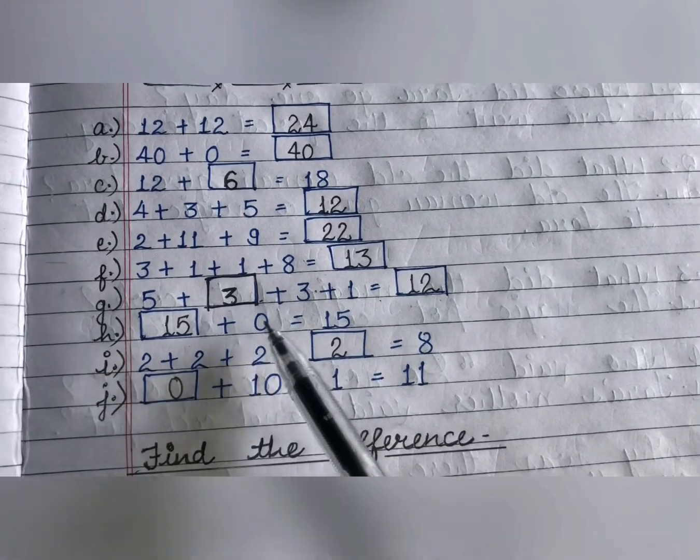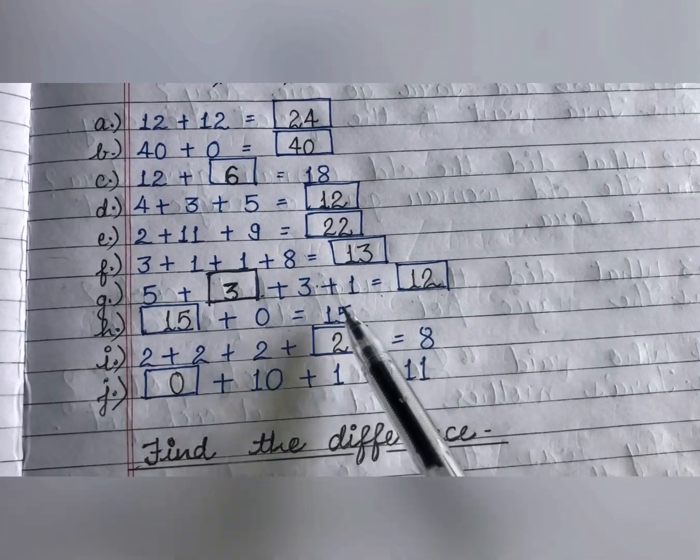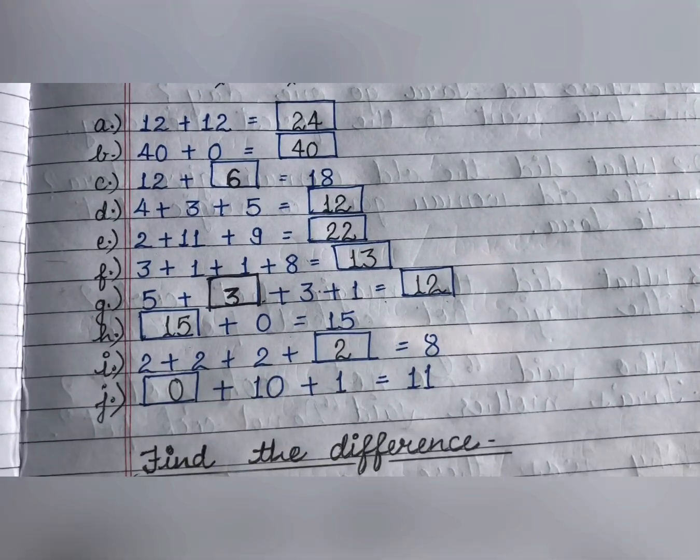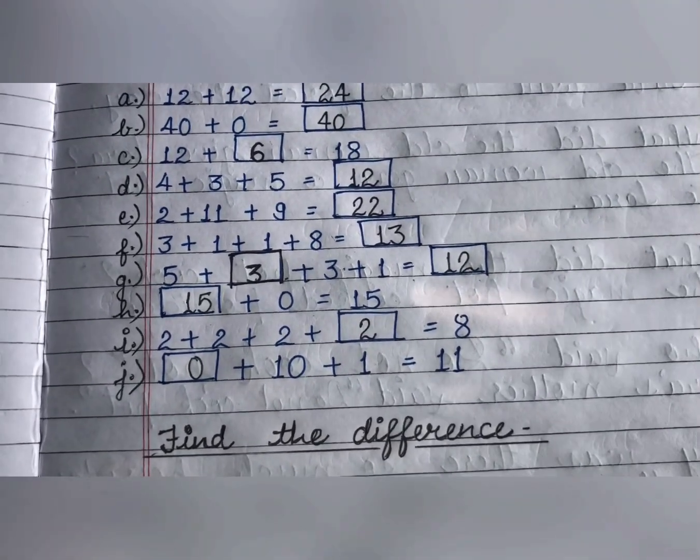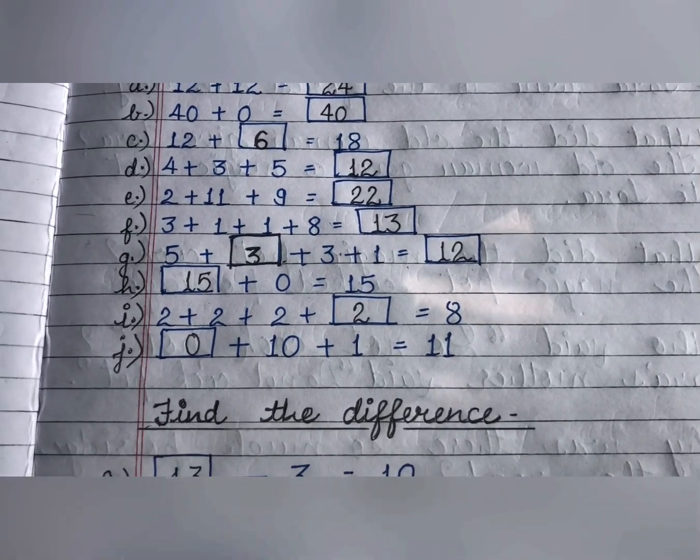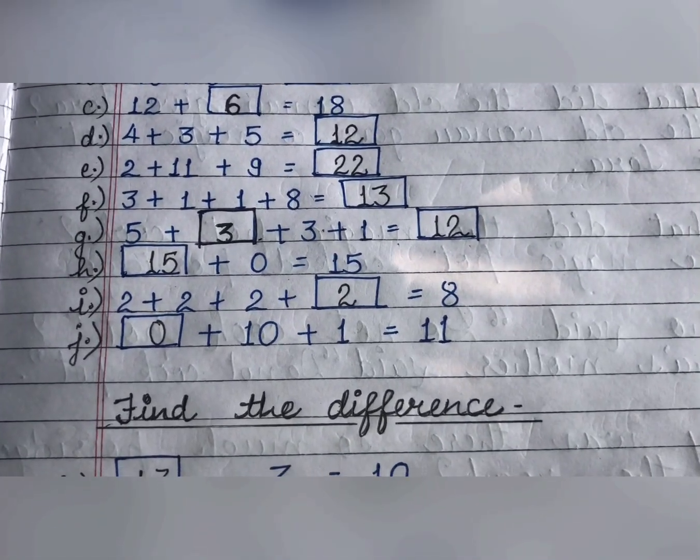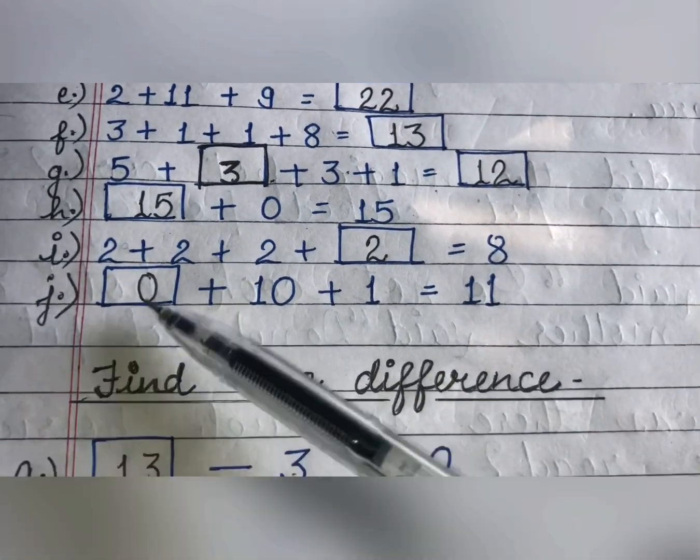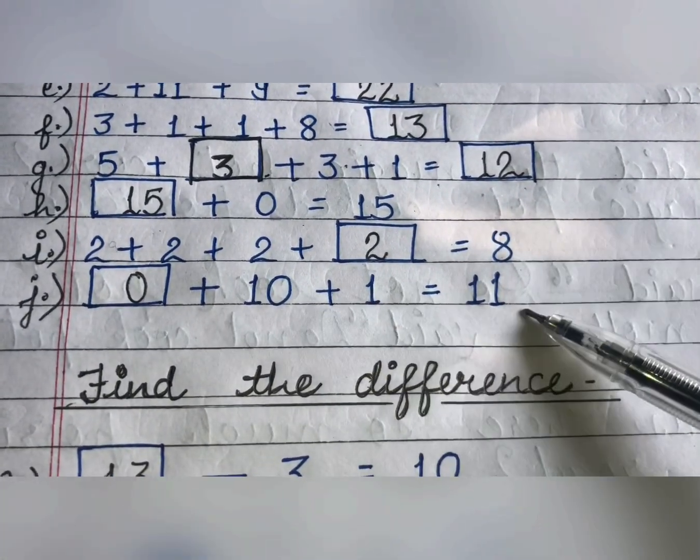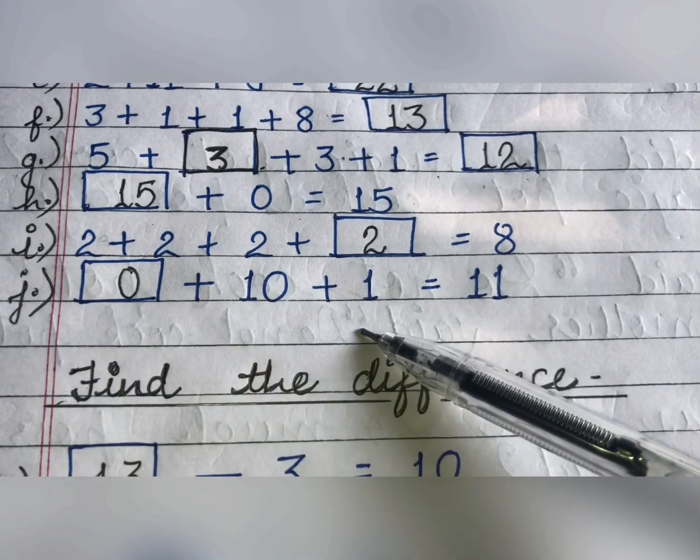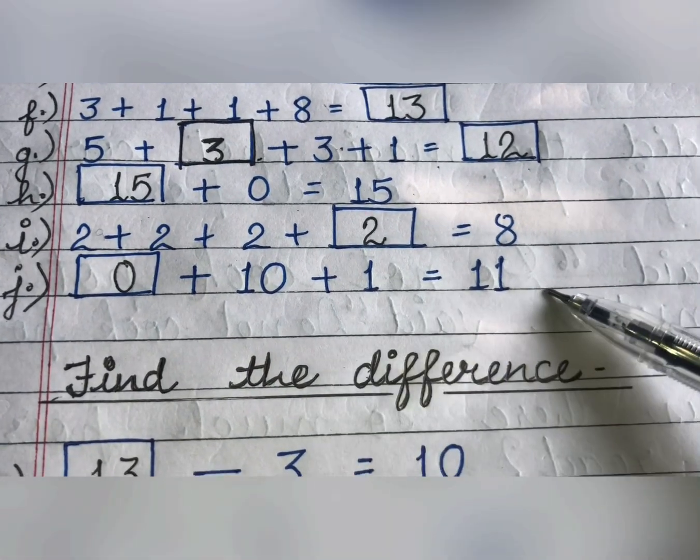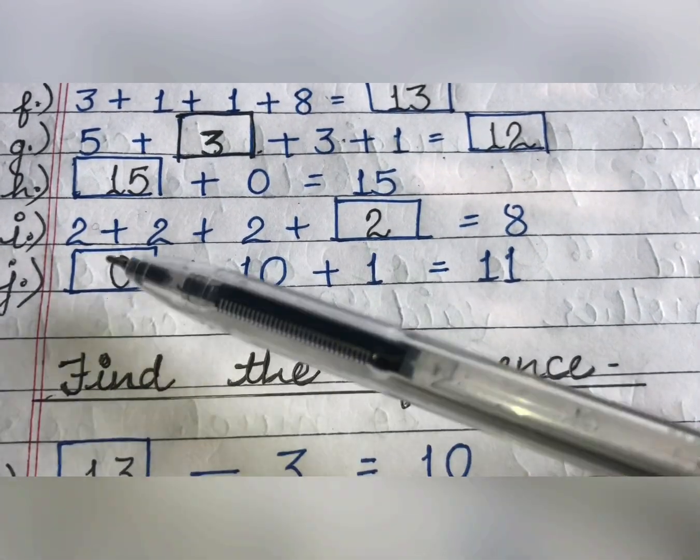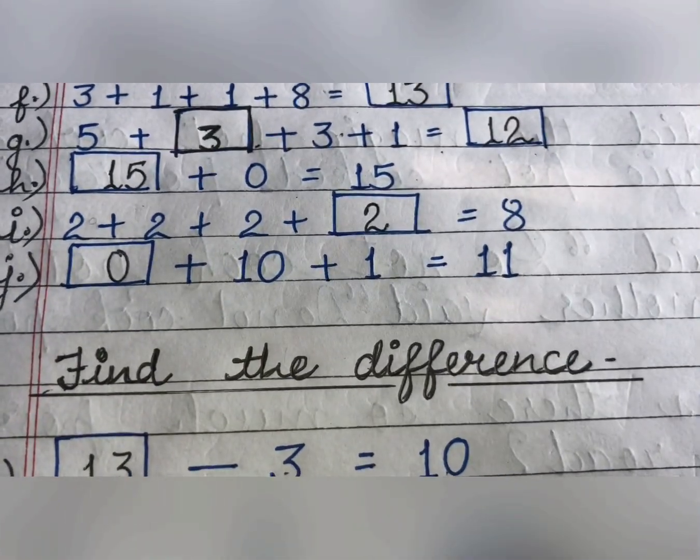Now, which number we will add to 0 to get 15? Simple, 15 only. When you add 0 to any number, you get the same number. Next is 2 plus 2 plus 2. Which number do we add to 2 plus 2 plus 2 to get 8? Add 2. Now, 10 plus 1 is equal to 11. Which number do we add? When we add 10 and 1 we already get 11, so that means 0. No other number is added.